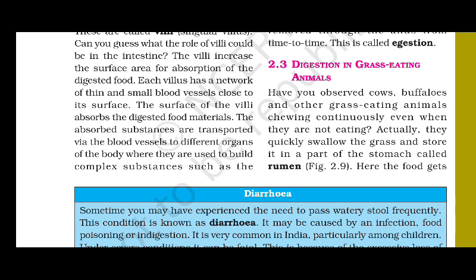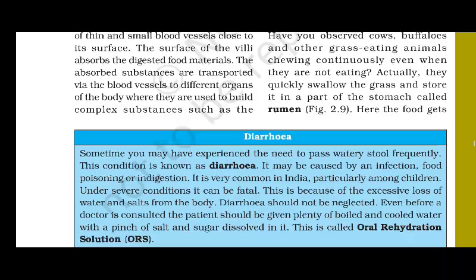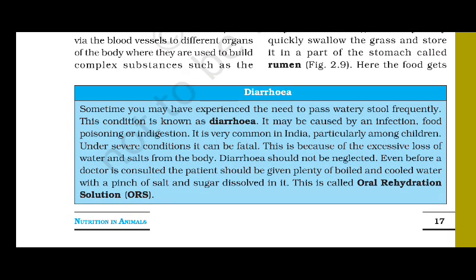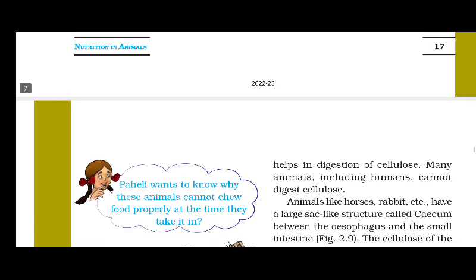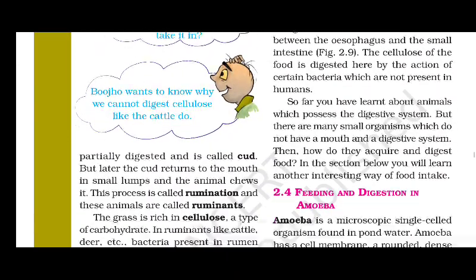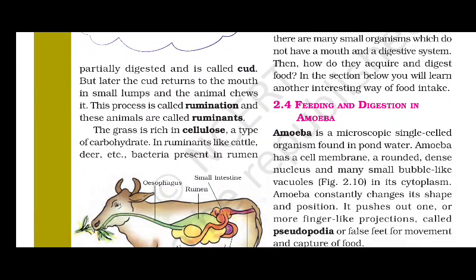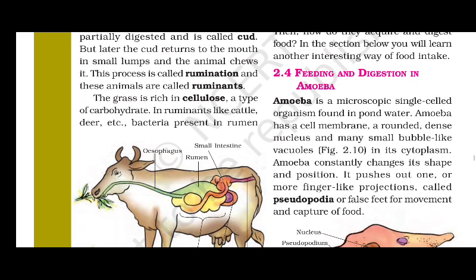Have you ever observed cows and other grass-eating animals chewing continuously even when they are not eating? Actually, they quickly swallow the grass and store it in a part of the stomach called the rumen. After that, the partially digested food is called curd, and the curd returns to the mouth in a small lump for the animal to chew.